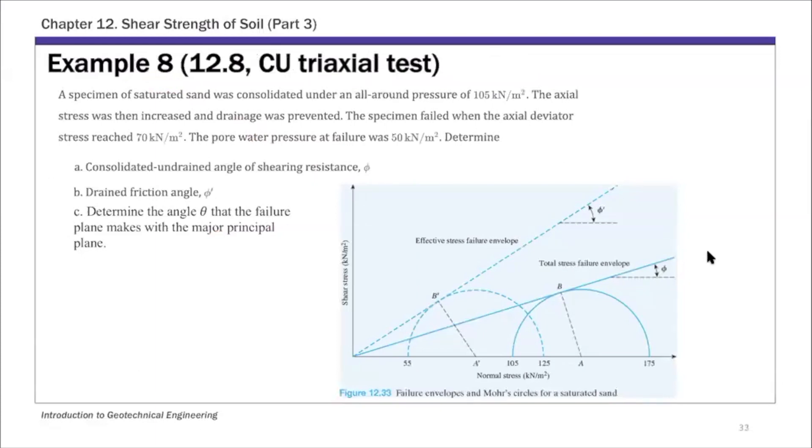This first example is a CU triaxial test, Example 8 of Chapter 12. For this example, you are given CU triaxial test results and you're asked to first determine these two strength parameters, phi and phi prime. I also added one more question here: to determine the failure plane inclination angle theta.